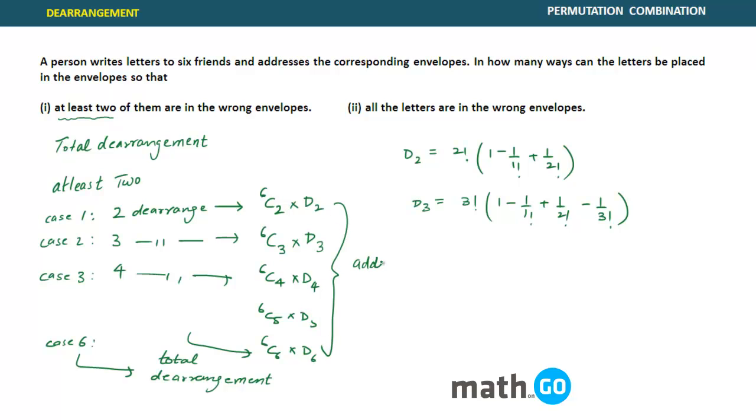So if you add them up, adding them up will give you the answer. Adding them is the answer. So this is how you have to solve these kinds of questions. The second part was all the letters are in the wrong envelope. So this is nothing but case six. This is how you apply the case of de-arrangement.